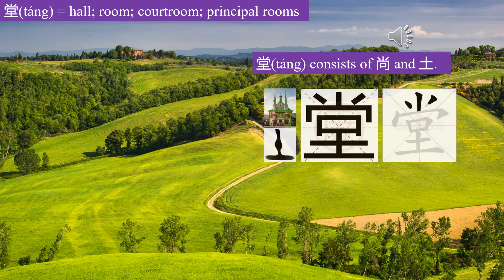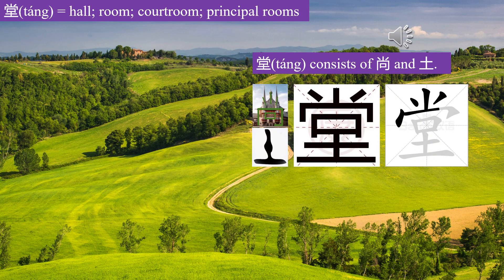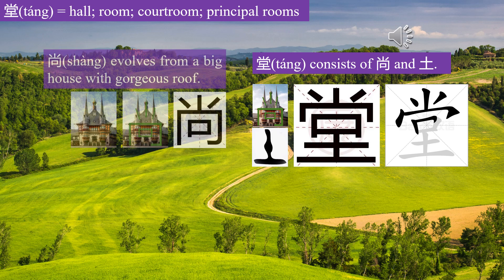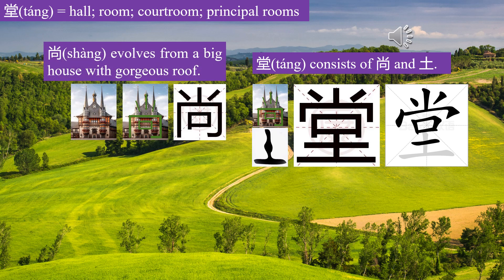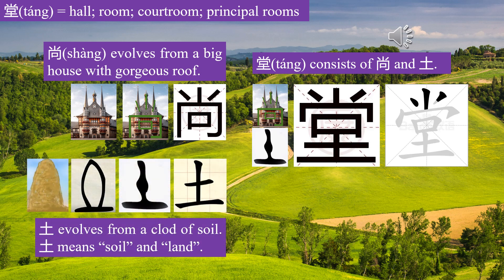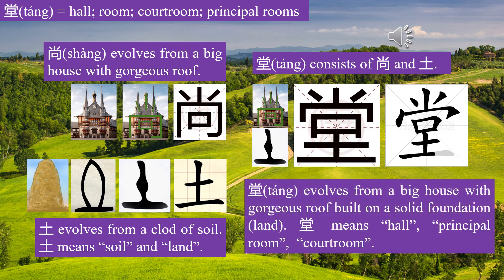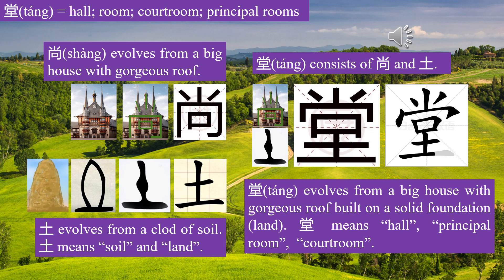Character 堂 (Táng) consists of 向 and 土. 向 evolves from a big house with a gorgeous roof. 土 evolves from a clod of soil, meaning soil or land. 堂 evolves from a big house with a gorgeous roof built on a solid foundation. 堂 means hall, principal room, court room.